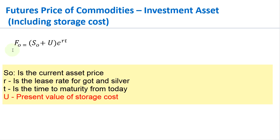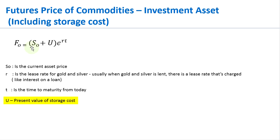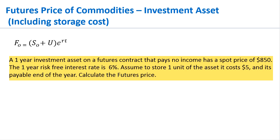Let's go through a simple example to understand the concept. We are looking at a one-year futures contract on an investment asset that pays no income and has a spot price of eight hundred and fifty dollars. The one-year interest rate is six percent. Assume that to store one unit of the asset it costs five dollars, payable at the end of the year. Calculate the futures price.